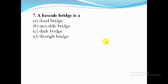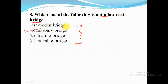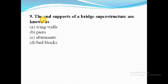A bascule bridge is a movable bridge. Which one of the following is not a low-cost bridge? Among these four options, masonry bridge is not a low-cost bridge. The remaining three — wooden bridge, floating bridge, and movable bridge — are low-cost bridges.